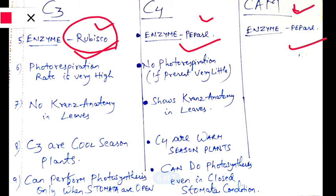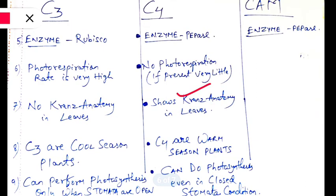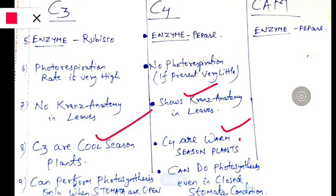The photorespiration rate is very high in C3 plants, whereas in C4 plants no photorespiration or very little is seen. In anatomy, C3 plants have no specialized leaf structure, but C4 plants show Kranz anatomy, making them special. C4 plants are warm-season plants, whereas C3 plants are cool-season plants.